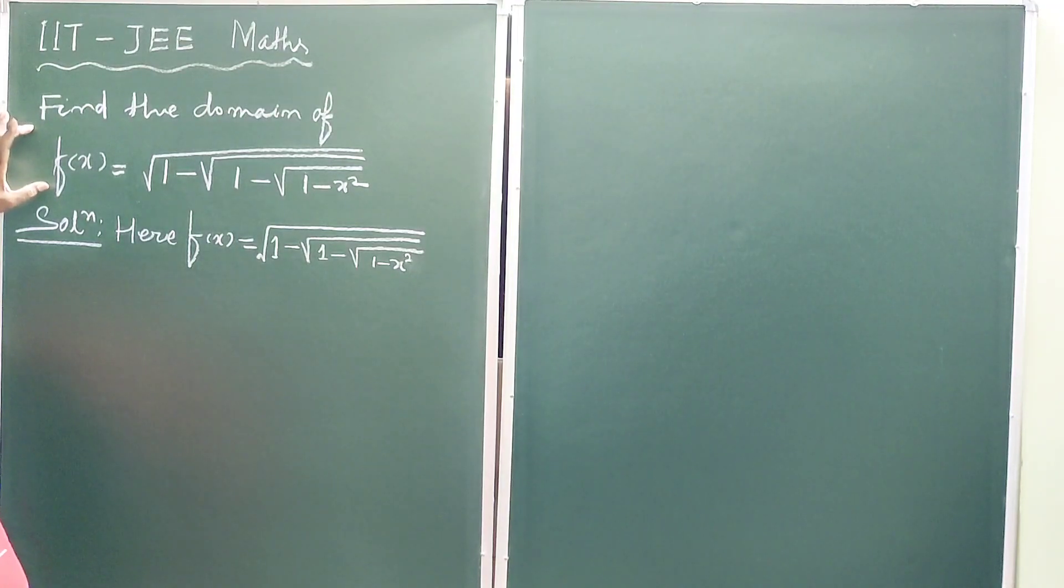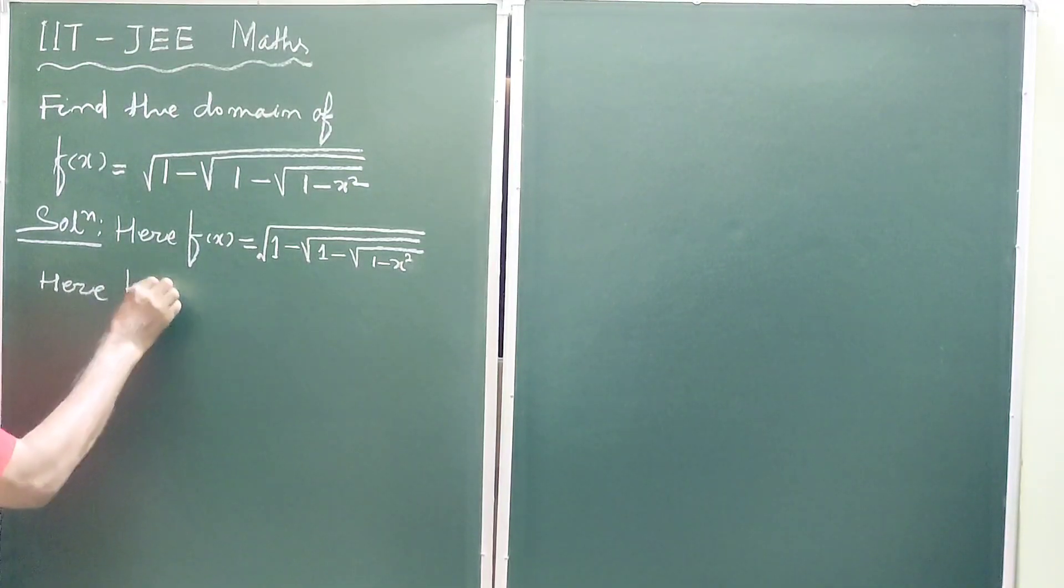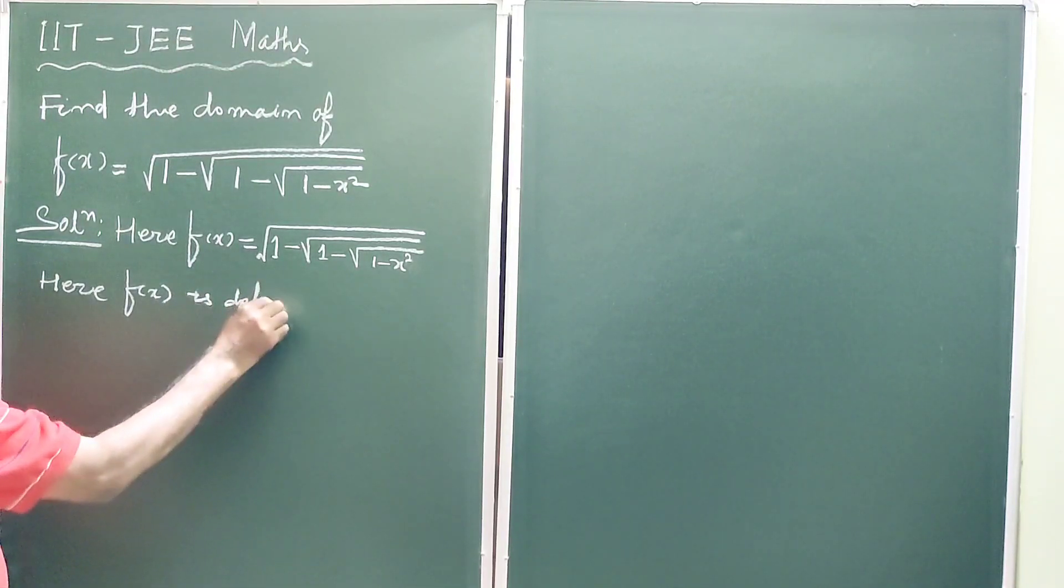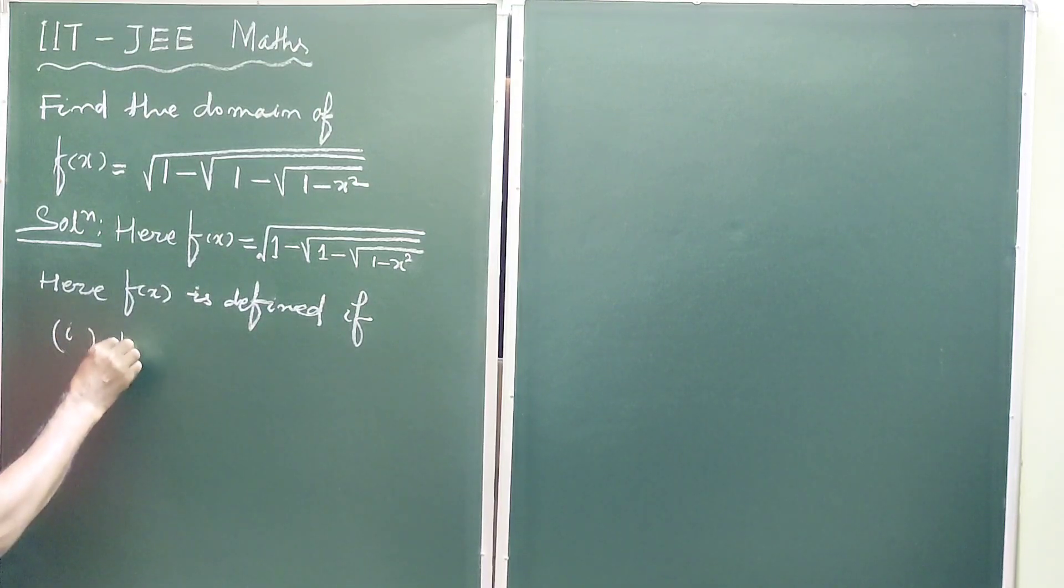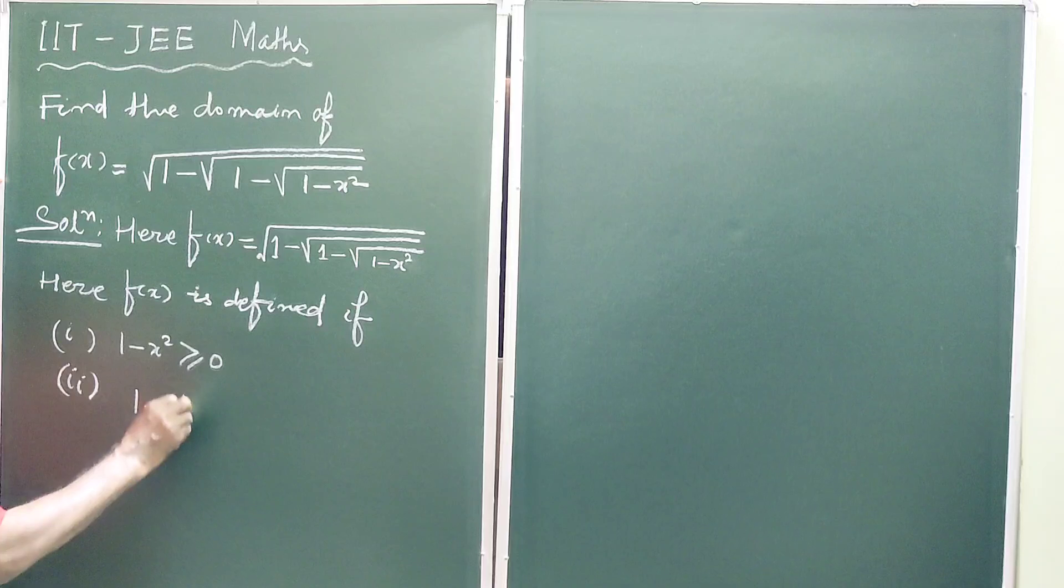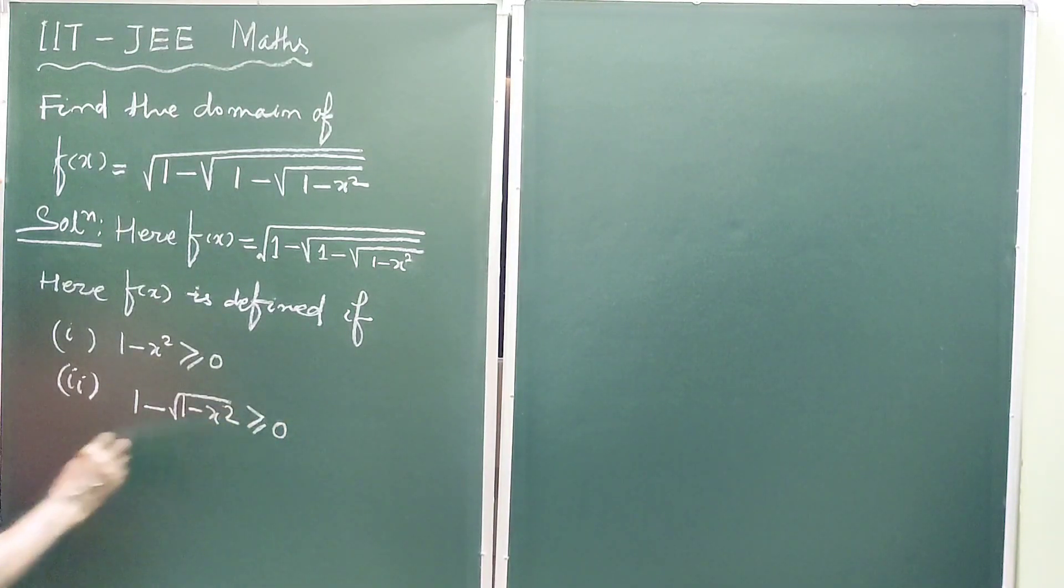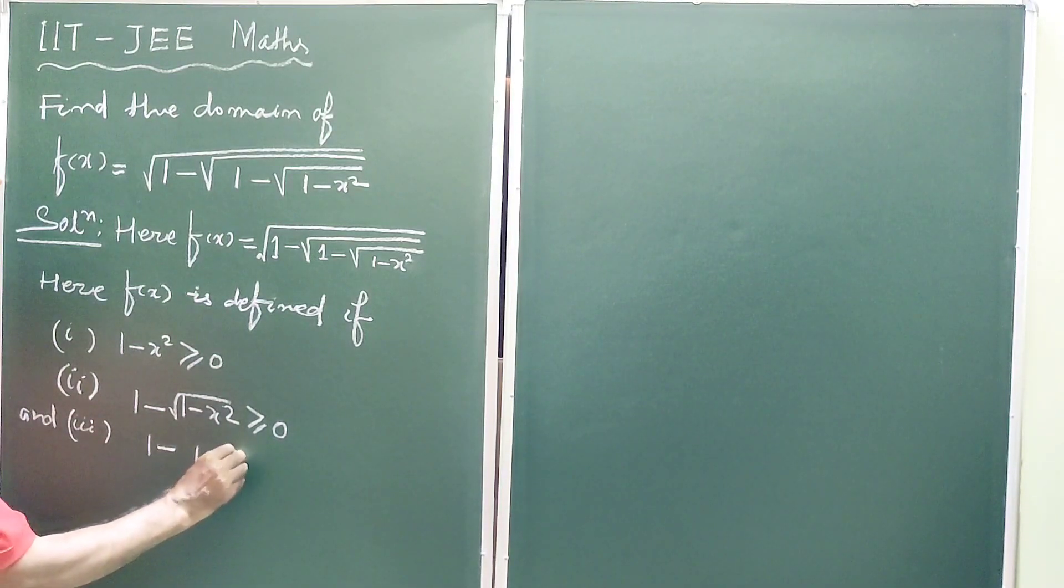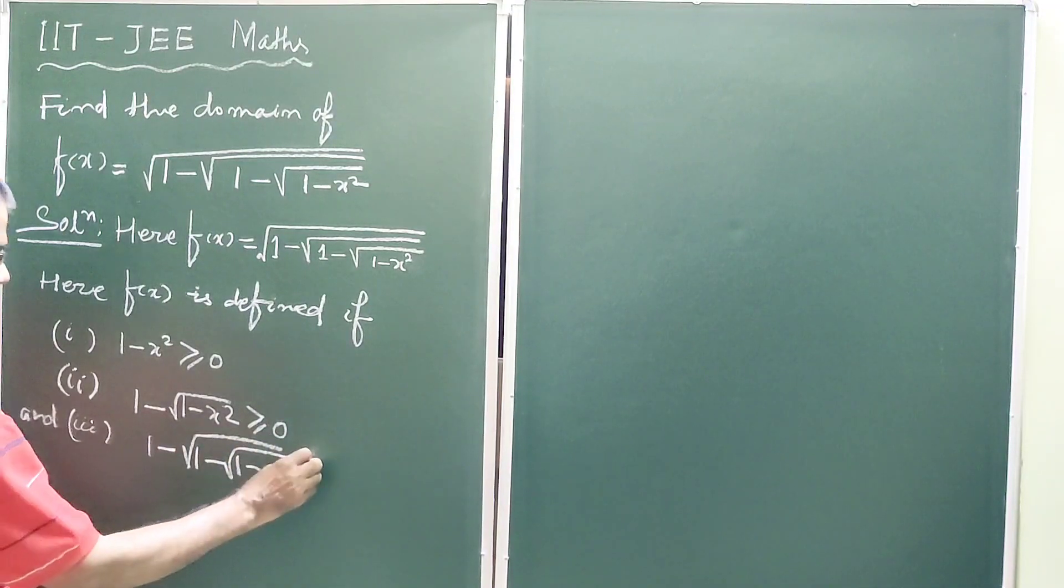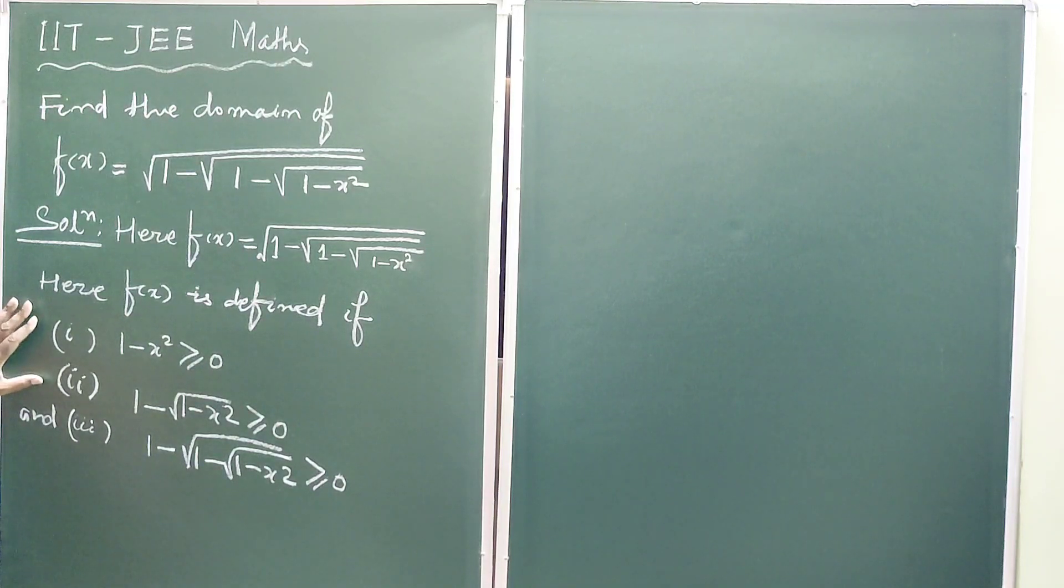We know the domain of the function f(x) are the values of x for which f(x) is defined. Here, f(x) is defined if 1 - x² ≥ 0, second condition 1 - √(1-x²) ≥ 0, and 1 - √(1 - √(1-x²)) ≥ 0. So these are the required conditions for which f(x) is defined.